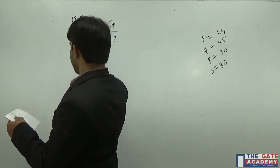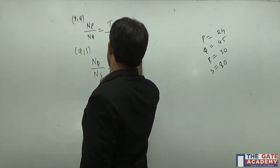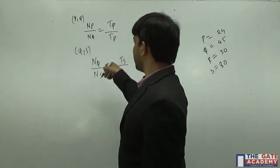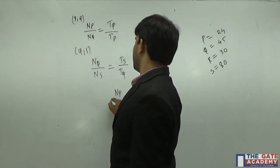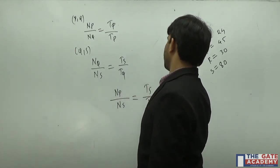Similarly, gear Q and gear S are in mesh, so speed of Q to speed of S is number of teeth on S to number of teeth on Q. Multiplying both equations, I can write the speed of P to speed of S is number of teeth on S to number of teeth on P.